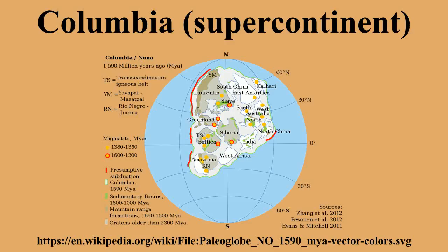In the initial configuration of Rogers and Santosh, South Africa, Madagascar, India, Australia, and attached parts of Antarctica are placed adjacent to the western margin of North America, whereas Greenland, Baltica, and Siberia are positioned adjacent to the northern margin of North America, and South America is placed against West Africa. In the same year, Jawaal proposed an alternative configuration of Columbia, in which the fits of Baltica and Siberia with Laurentia and the fit of South America with West Africa are similar to those of the Rogers and Santosh configuration, whereas the fits of India, East Antarctica, and Australia with Laurentia are similar to the corresponding fits in the configuration of Rodinia.